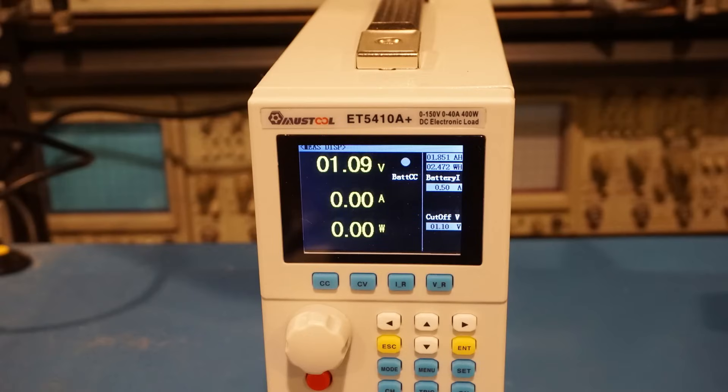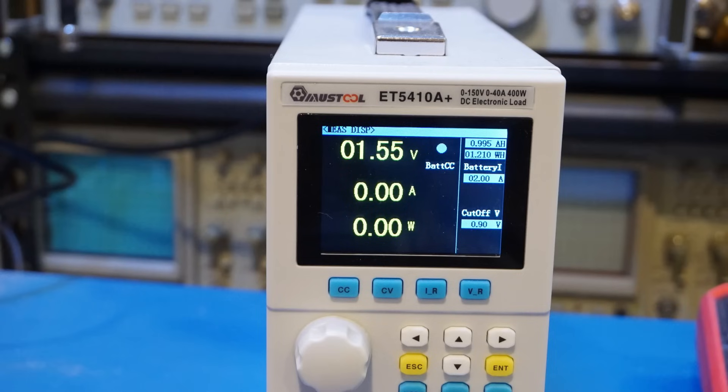When I discharged the battery at 2 amps though, I was only able to get around 1 amp hour out of the battery. Now, as you can see, I set the cutoff to 0.9 volts instead of 1.1 volts, because there was significant voltage drop across the wires to the electronic load.